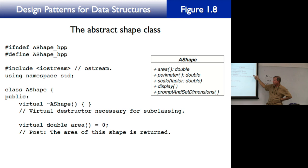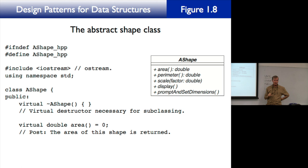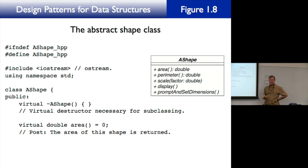Display's post condition is: the shape's name and dimensions are printed to the output stream OS. PromptAndSetDimensions' post condition is: this shape's dimensions are prompted and set, and no dimension is negative. Some functions don't have preconditions, which means there are no restrictions on calling them. A precondition puts a restriction — if you call a function and violate its precondition, the program will crash with an error message.